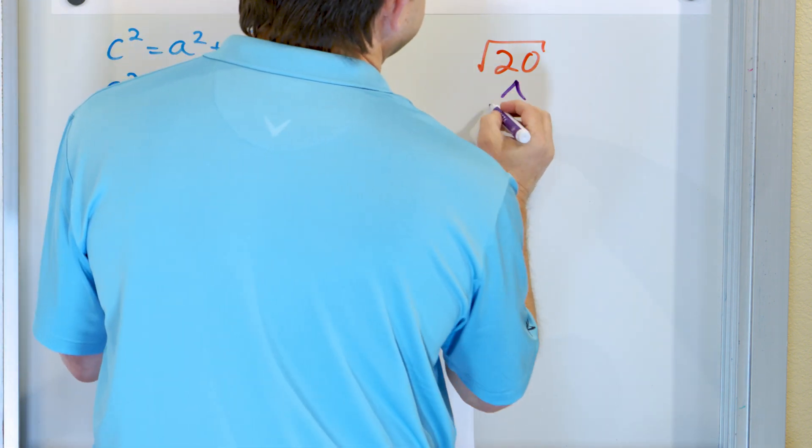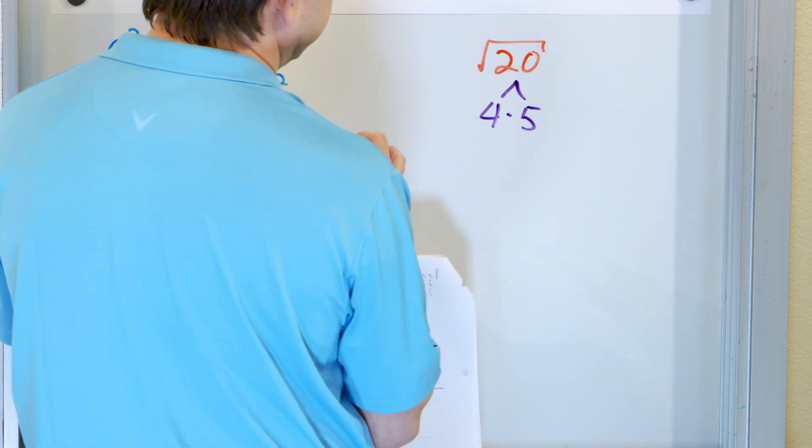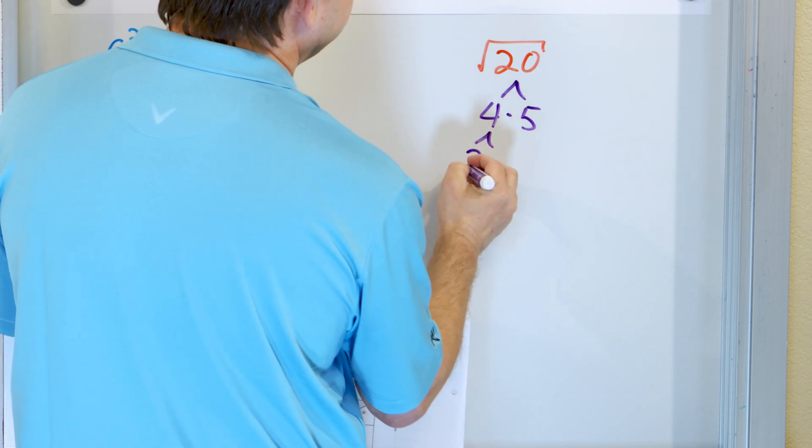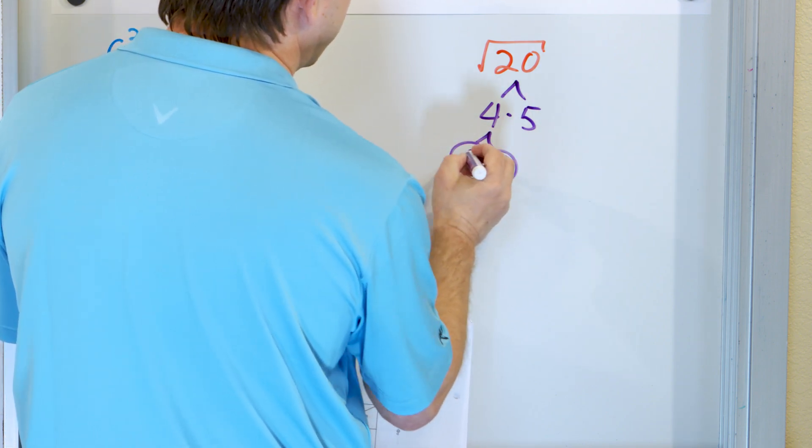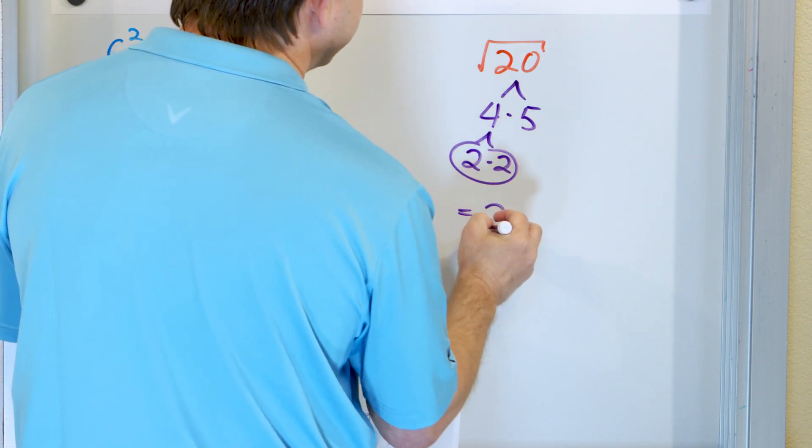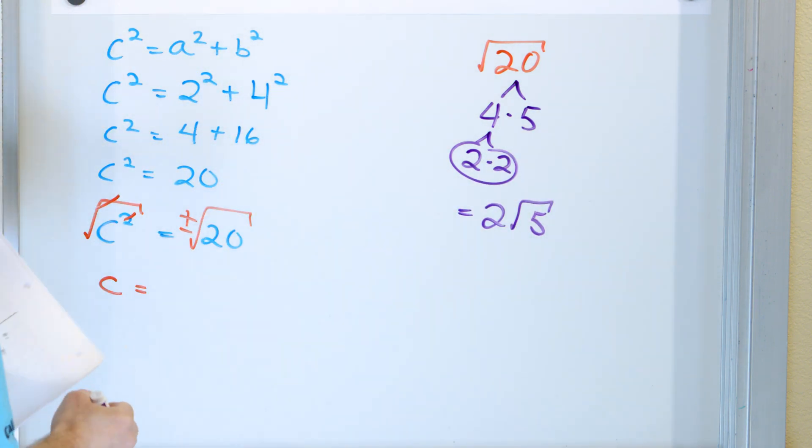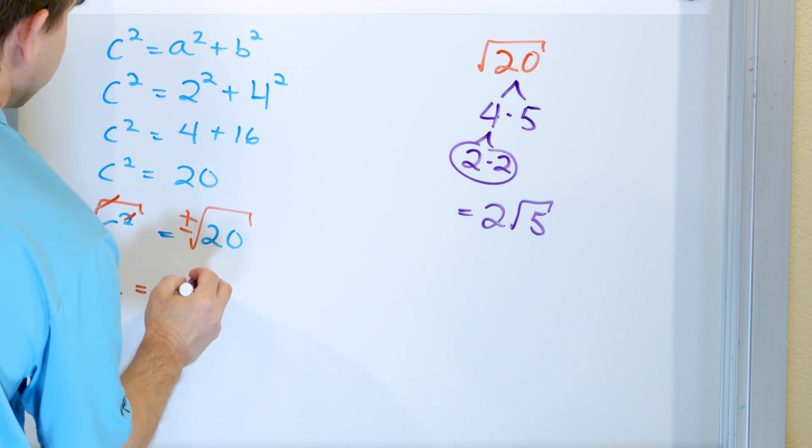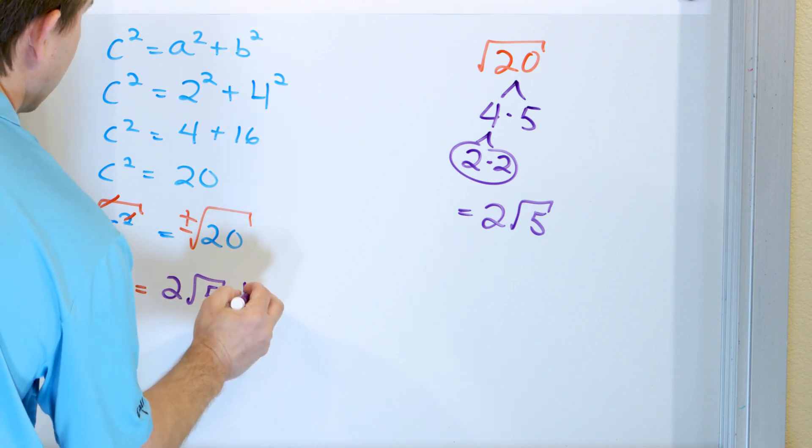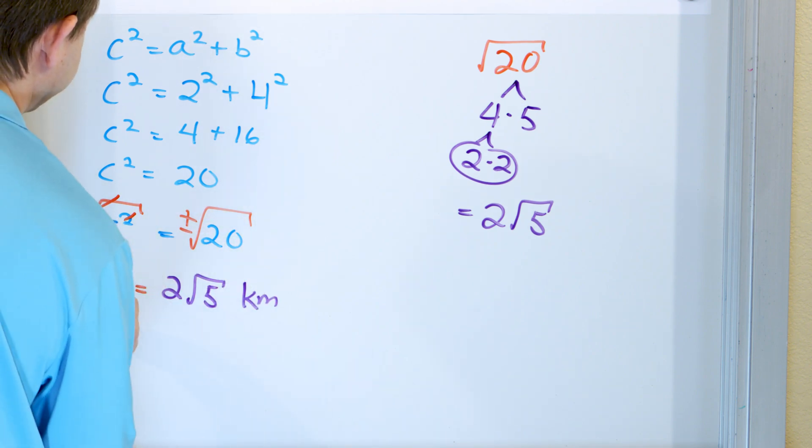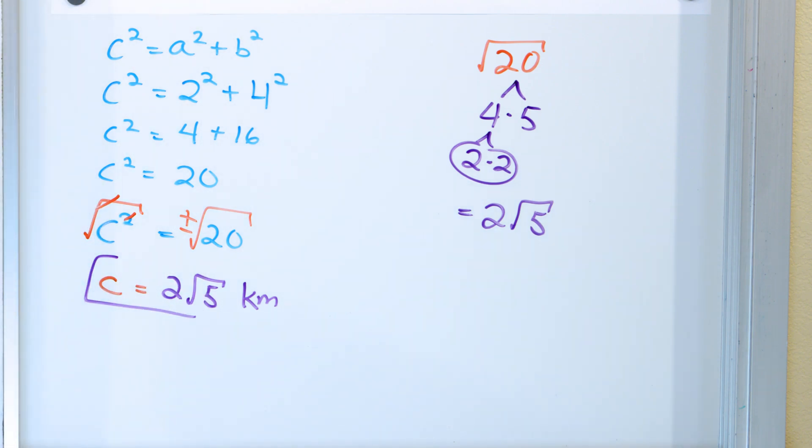How do we take the square root of 20? Well, we can write this as 4 times 5 is 20. The 4 we can write is 2 times 2. And we have a pair right here, so it comes out as the single 2 comes out, square root of 5 is left behind. So we have 2 times the square root of 5, and the units here were all in kilometers, so that's what we're going to have left behind. And that's basically the answer.